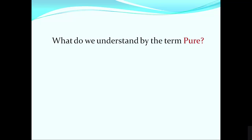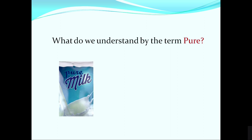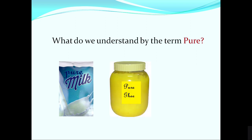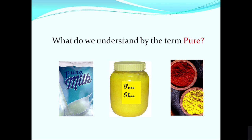Before going into details of how pure matter is, let us clarify a misconception about the term 'pure.' When we go to market and purchase milk, ghee, or spices, we ask for pure products. Here 'pure' means there is no adulteration. A common person has this notion, but scientifically it is not true. Milk is a mixture of water, fats, proteins, and carbohydrates. Spices are also mixtures of many substances obtained from plants.